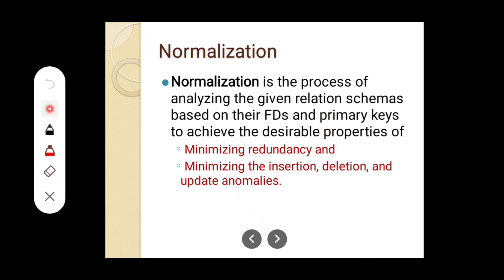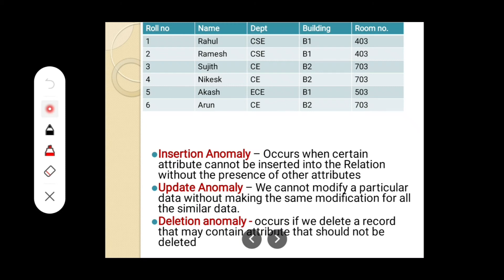Normalization is based on functional dependencies — FD means functional dependencies — and primary keys. Based on these functional dependencies and primary keys, we are normalizing the table. Today we are going to discuss the introduction to normalization and what are the insertion, deletion, and update anomalies. And what is the solution to tackle these insertion, deletion, and update anomalies. I will explain it with a table. The table contains roll_number, name, department, building, and room_number.